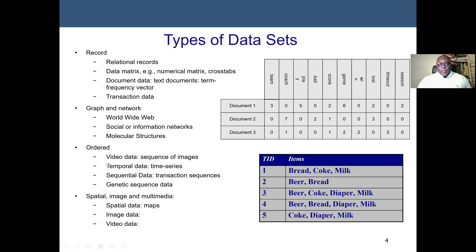We also have the ordered type. An example would be video data — a sequence of images. Temporal data means data that goes with time. Most of the time with temporal data, the x-axis will be the period of time, which can be years, months, or weeks. A very good example would be a stock analysis data set, where we want to know the time the price went up or down. Temporal data means a time series.